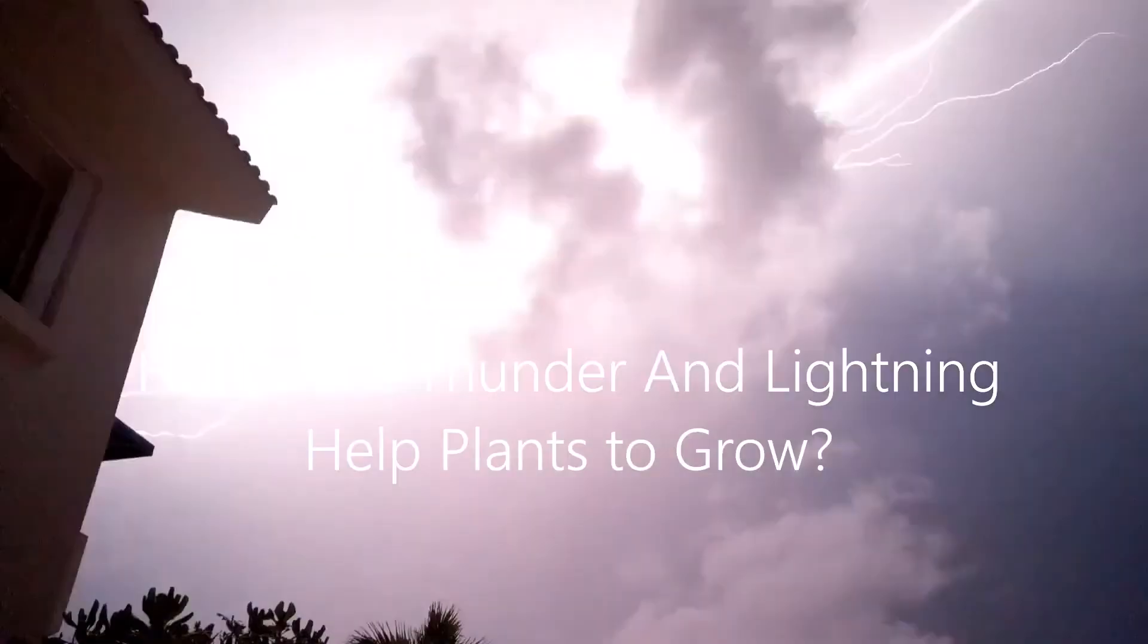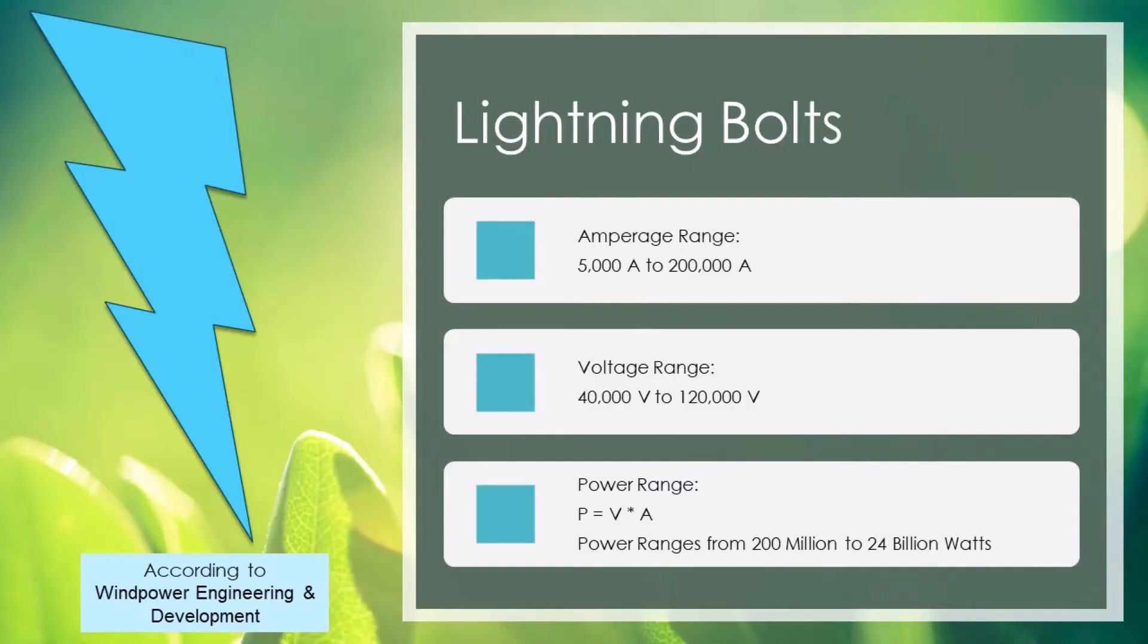Thunder is powerful, really powerful. Lightning bolts can vary from 5,000 amps to 200,000 amps, and voltages varying from 40,000 volts to 120,000 volts. That means that the power carried by a lightning strike can be on the order of over 20 billion watts.